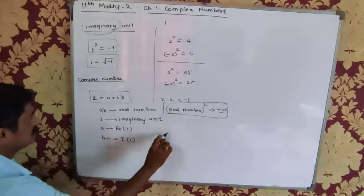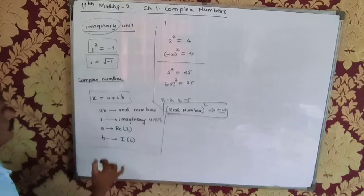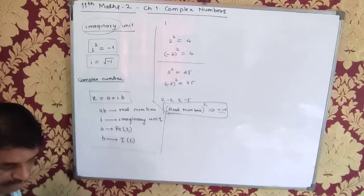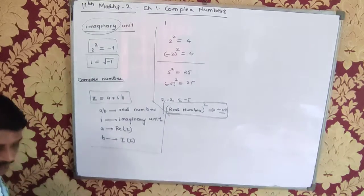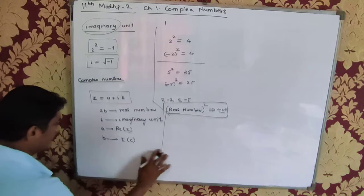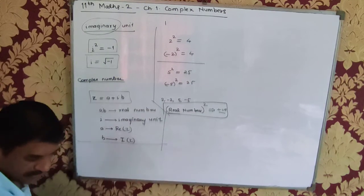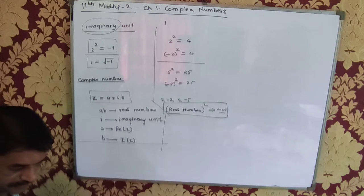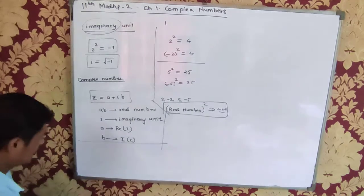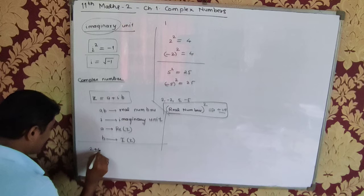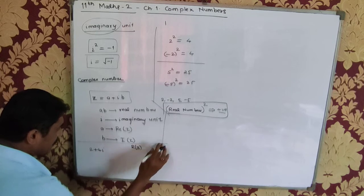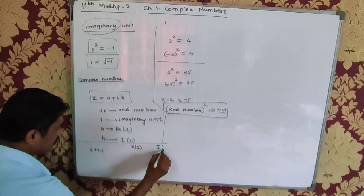Any doubts about this? This is the definition of the complex number. You can refer to the table on page number 1. Now I will consider some complex numbers. If I say 2 + 4i, can you tell me what is the real part and what is the imaginary part? 2 is real and 4 is imaginary. Very good.